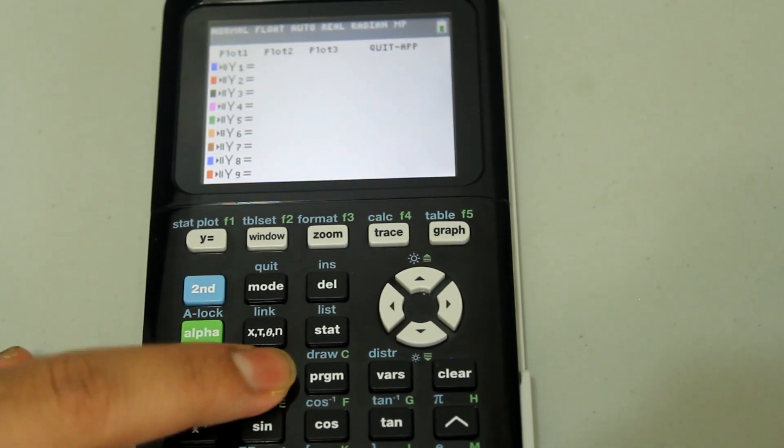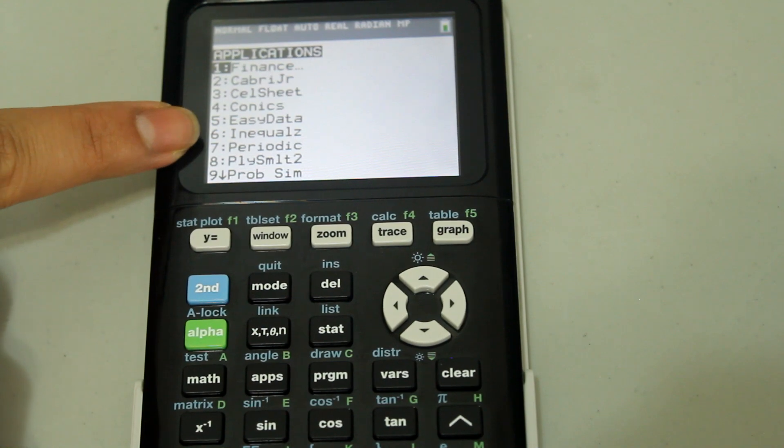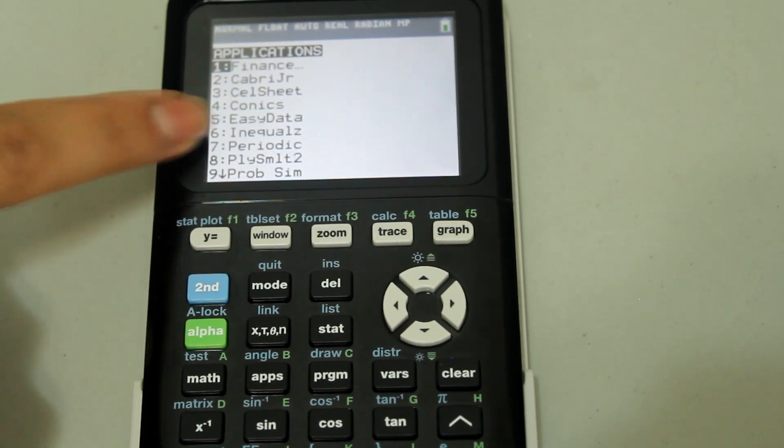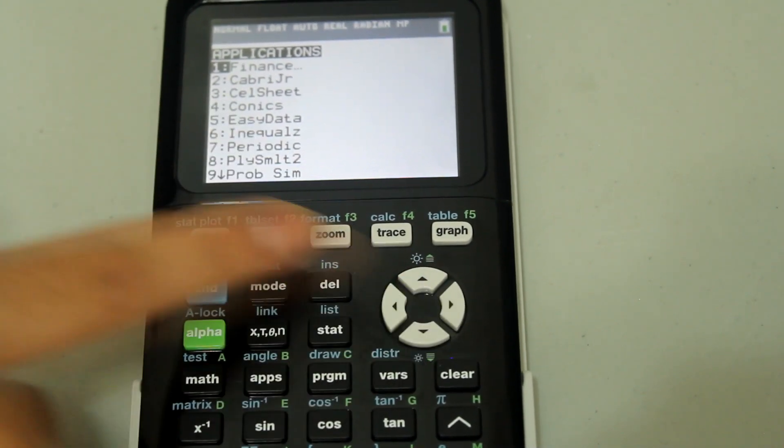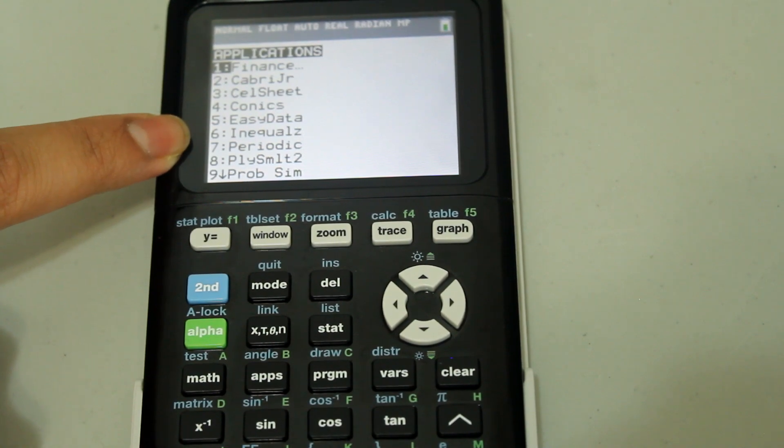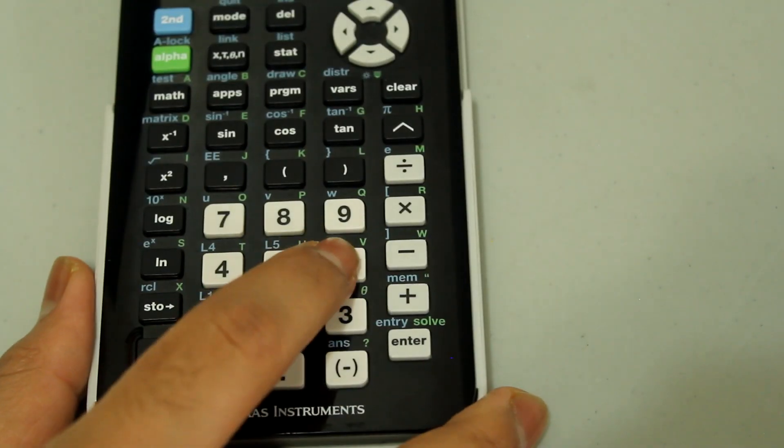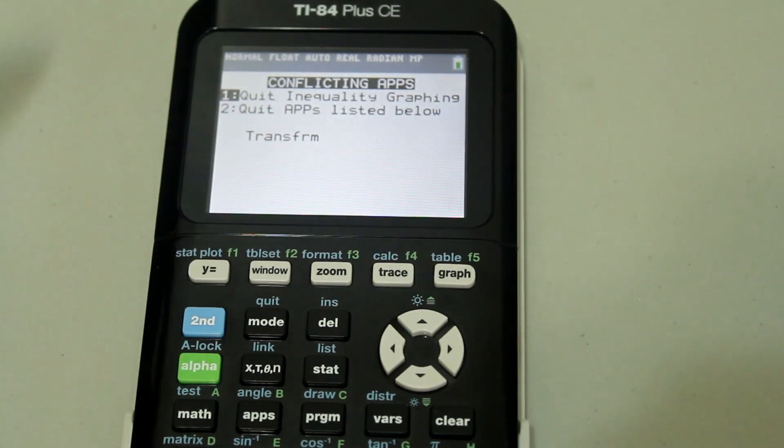Hit the apps button. Go down to the inequality option either using the down arrow or by entering number 6 on your number pad. And that opens the screen like this.